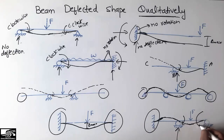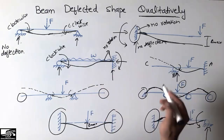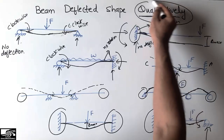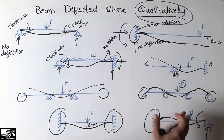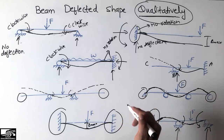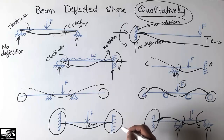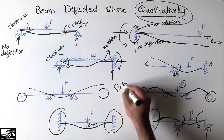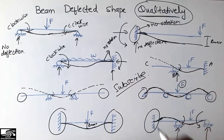I hope you guys understand how we draw the beam deflected shape qualitatively. There are no specific values like 2 kN or 5 kN — this is the qualitative way to describe and show the beam deflected shape for various types of beams. Hope you enjoyed, and don't forget to subscribe to the channel for daily civil engineering videos. Thank you for watching.